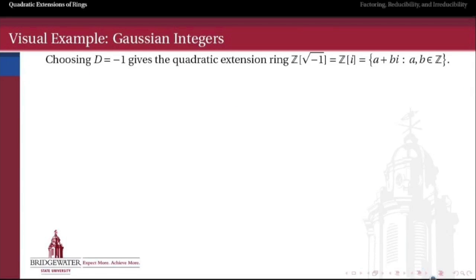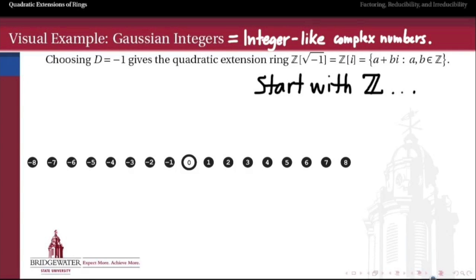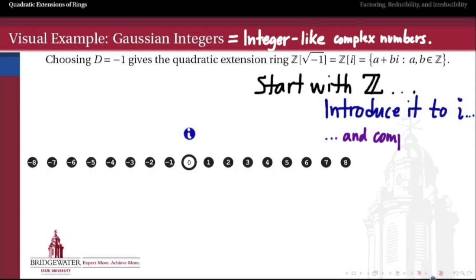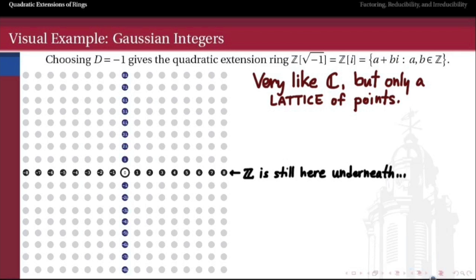I want to close this video with a rich example called the Gaussian integers. The Gaussian integers are the quadratic extension of the integers where D equals negative 1 — they are integer-valued complex numbers. We start with the integers, introduce i, and by completing the extension — taking all integer linear combinations of 1 and i — we get a new ring that looks like the complex numbers except it's only a lattice of points, not everything in between. The integers are still the base ring, serving the same function the reals did when we extended to the complex numbers.